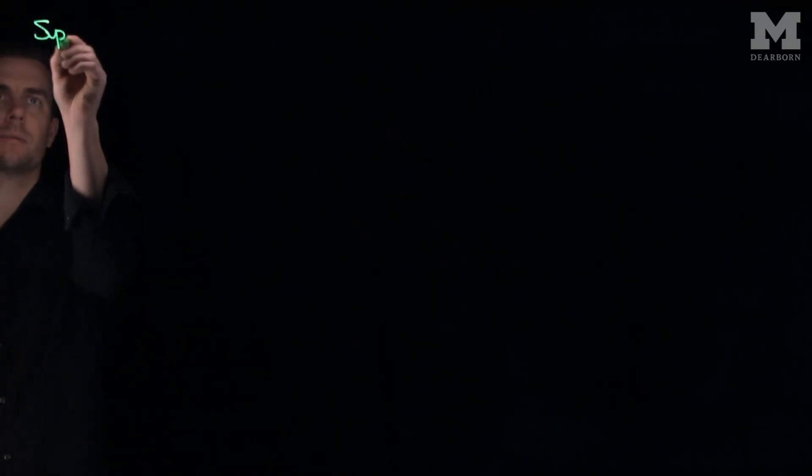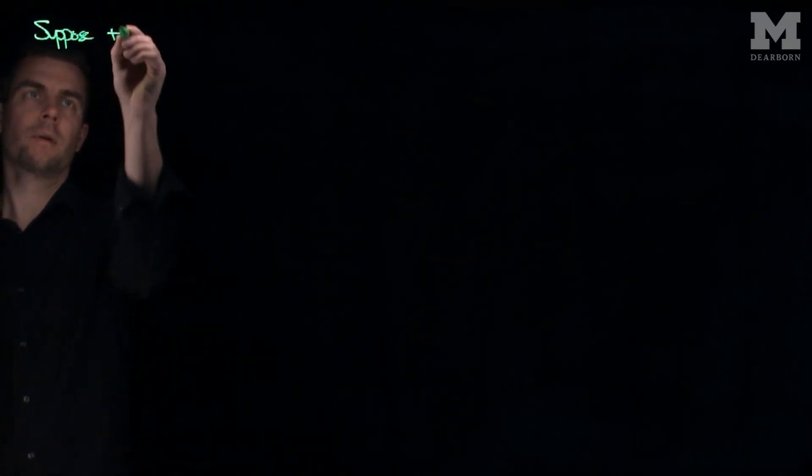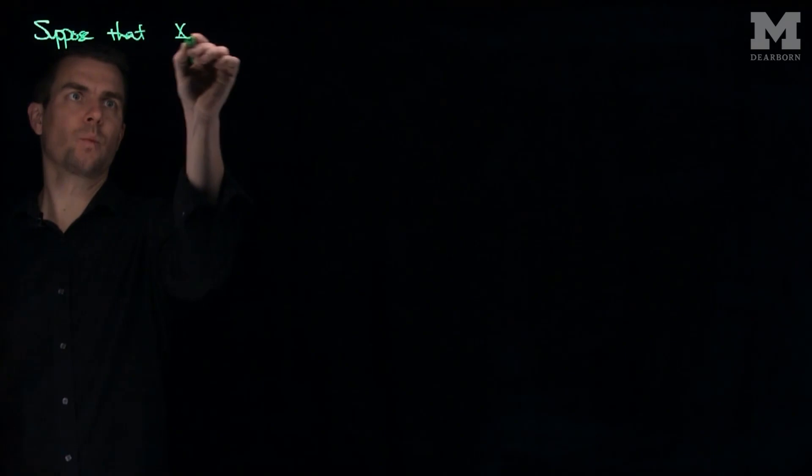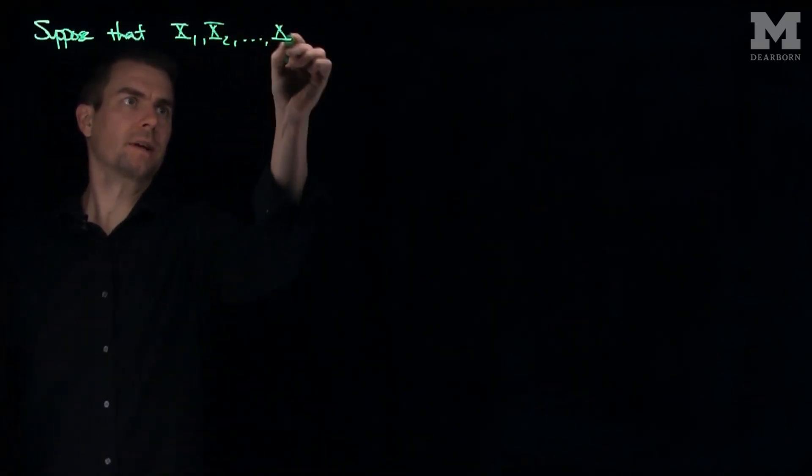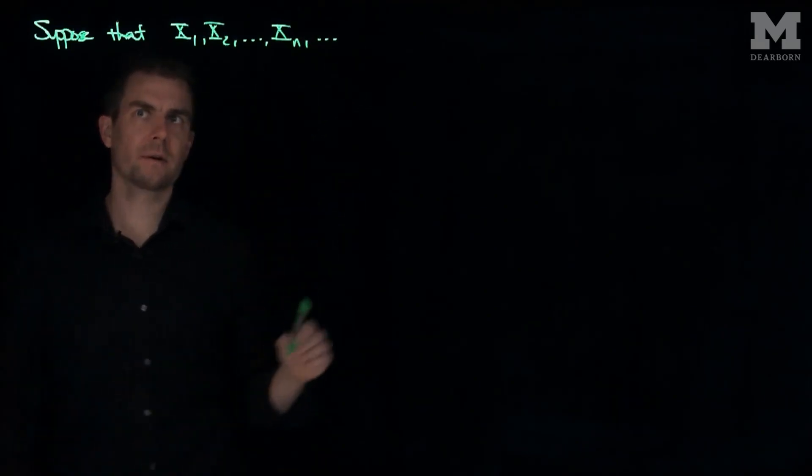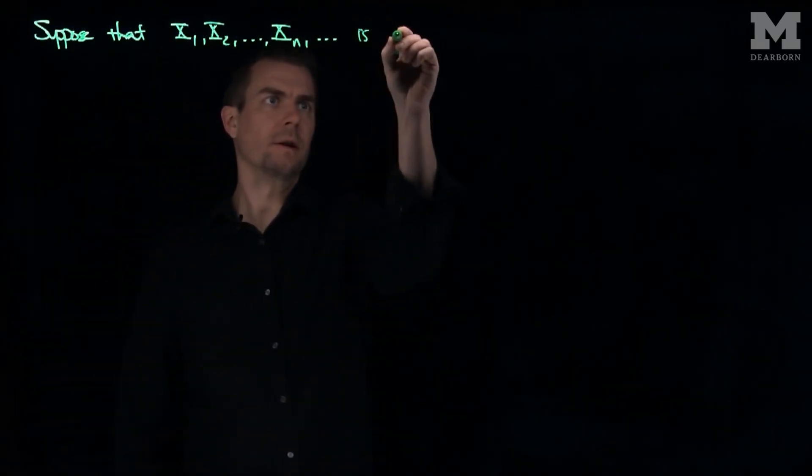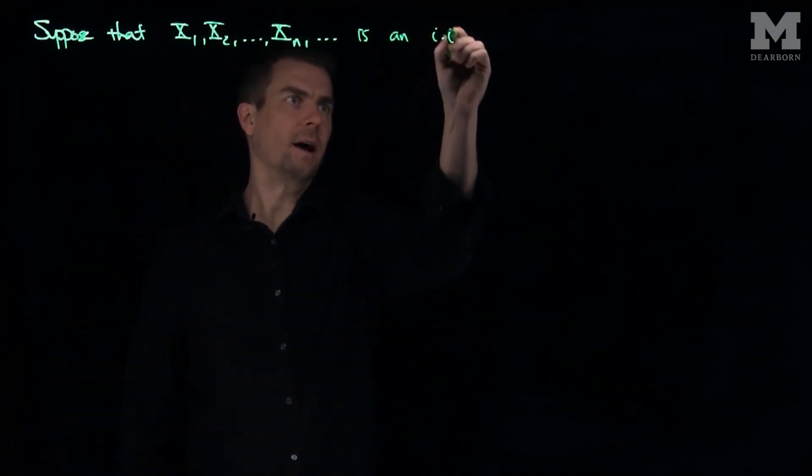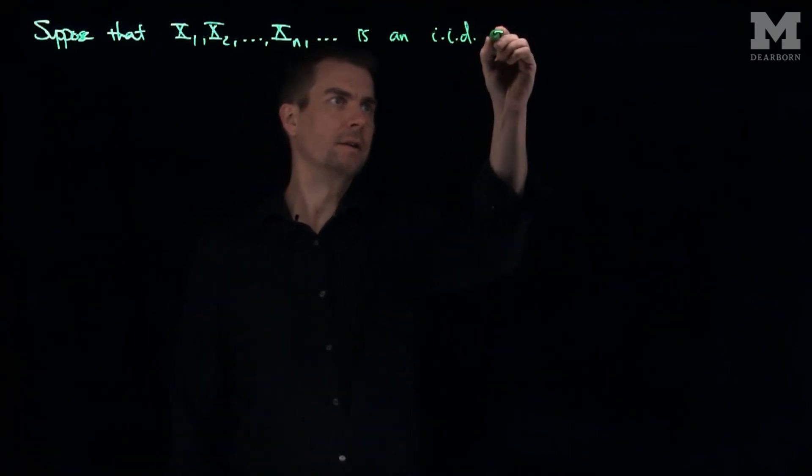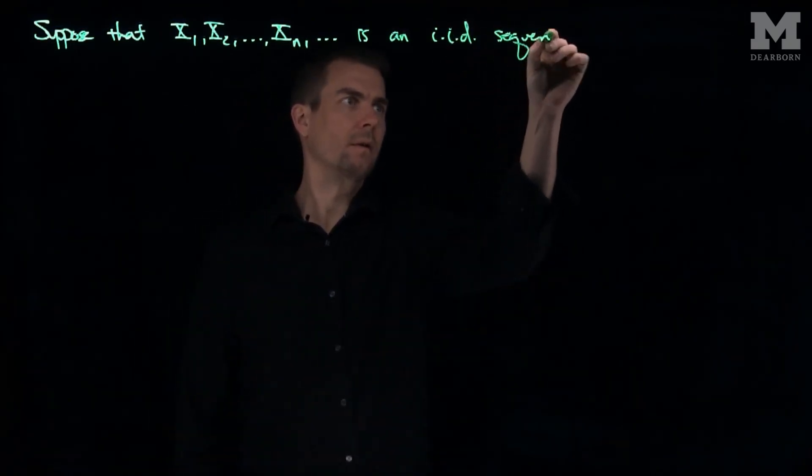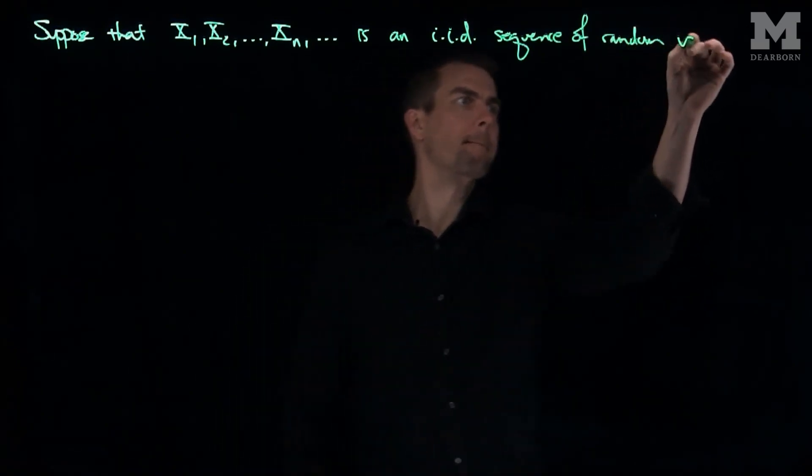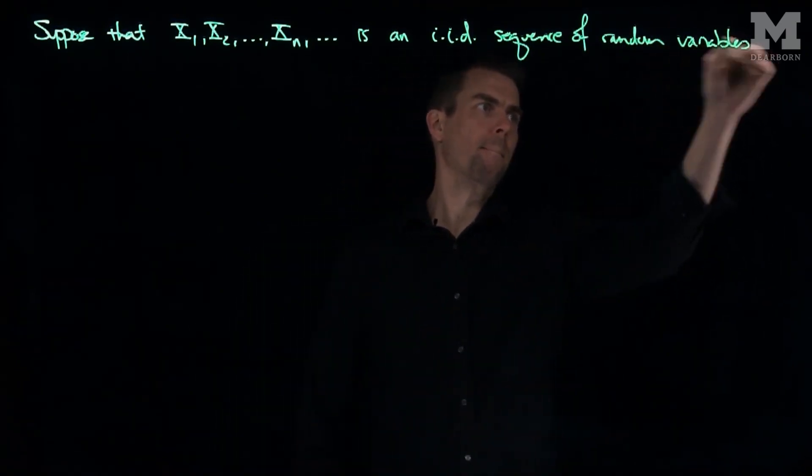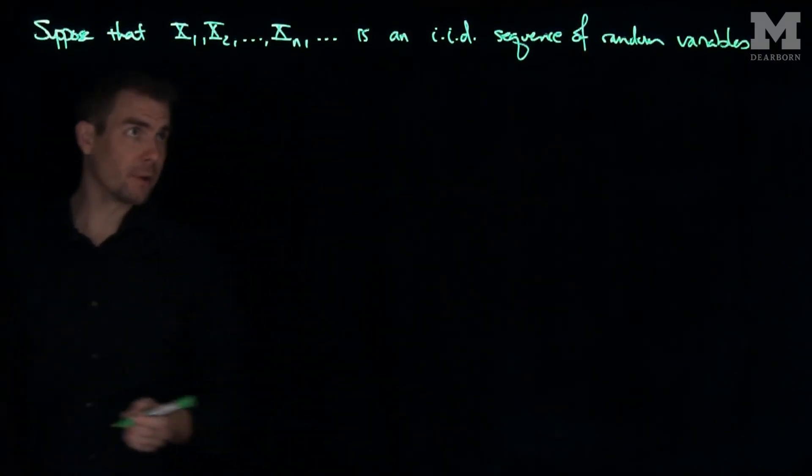Let's suppose that x1, x2, xn, etc. is an iid sequence of random variables. So they're independent and identically distributed.